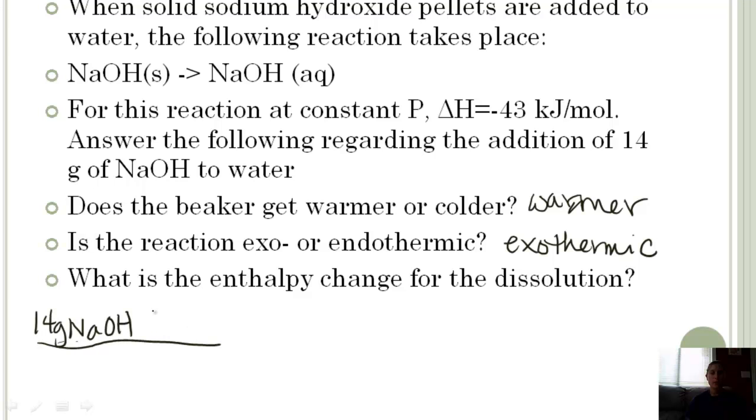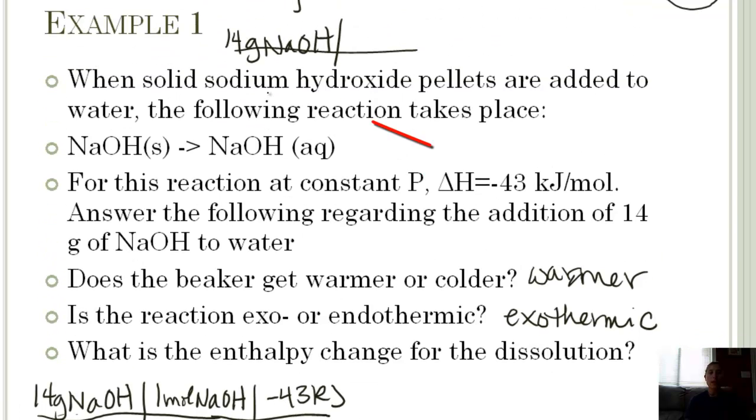14 grams of NaOH, if we want to go to moles, we need molar mass. For every one mole of NaOH, the mass is approximately 40 grams. Now I know that according to this balanced chemical equation, for every one mole of NaOH solid that is dissolved, I'm going to produce negative 43 kilojoules. For every one mole of NaOH in my reaction, it's negative 43 kilojoules.